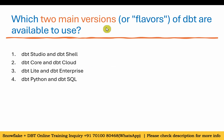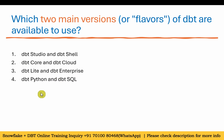Which two main versions or flavors of DBT are available? Options include DBT Studio or DBT Shell, DBT Core and DBT Cloud, DBT Lite or DBT Enterprise, or DBT Python or DBT SQL. We covered this in our basic session — the answer is two: DBT Core and DBT Cloud.